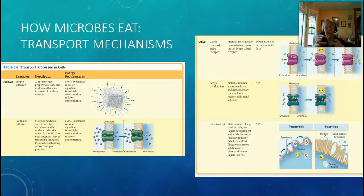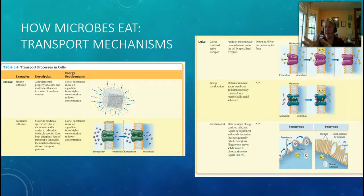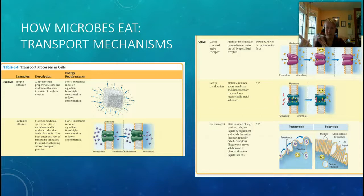The next option is group translocation. Something outside the cell is wanted, but in a slightly different form. It passes through an enzyme and is transformed using energy into something new within the cell. In the diagram you can see the molecules start as little red rice-looking nuggets, pass through the enzyme, and then look like candy corn — they're being transformed into what the cell needs.